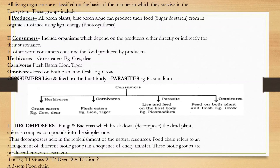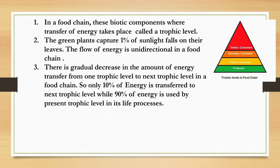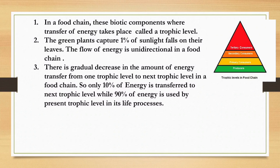In the food chain, herbivores are eaten by carnivores and producers form the base. For example: grass → deer → lion — a three-step food chain. Producers form the base of the food chain pyramid and are most numerous. Then we have primary consumers, secondary consumers, and tertiary consumers. Each step is called a trophic level. The first trophic level is producers, second is primary consumer, third is secondary consumer, and fourth is tertiary consumer.